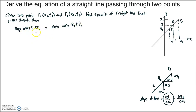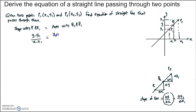The slope using P and P1 is the difference in the y coordinates divided by the difference in the x coordinates: y minus y1 divided by x minus x1. That equals the slope computed using P2 and P1, where the difference in y coordinates is y2 minus y1, divided by x2 minus x1.